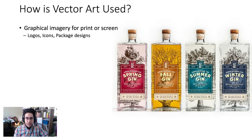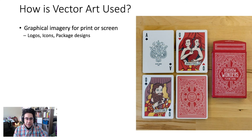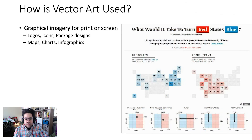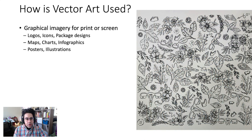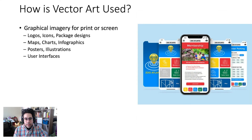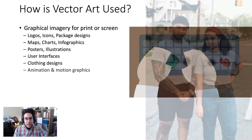So we know a little bit about the basics of what vector art is. Let's talk about how it's used. One of the main uses for vector art is producing graphical imagery for print or screen. That includes logos, icons, and package designs, maps, charts, and infographics, posters and illustrations, user interfaces, clothing designs, as well as animation and motion graphics.